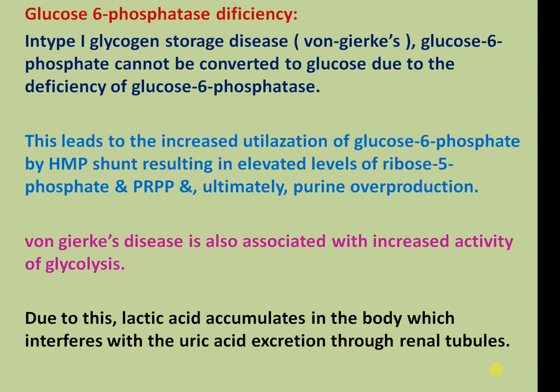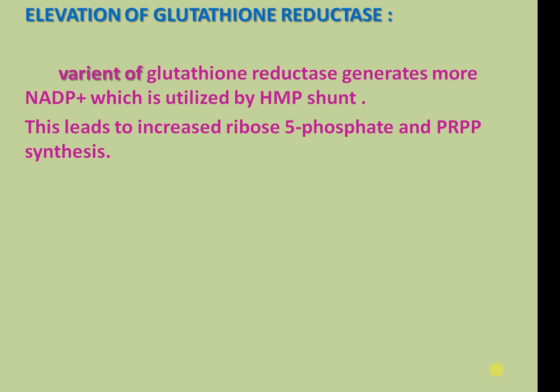Von Gierke's disease is also associated with increased activity of glycolysis, causing lactic acid to accumulate in the body, which interferes with uric acid excretion through the renal tubules. Elevation of glutathione peroxidase reductase: variant glutathione reductase generates more NADPH, which is utilized by the HMP pathway. This leads to increased ribose 5-phosphate and PRPP synthesis.